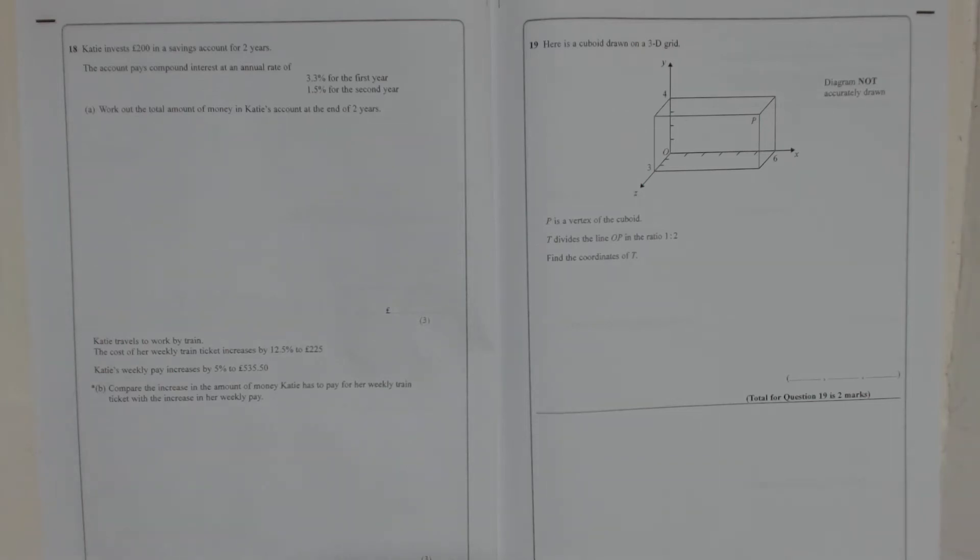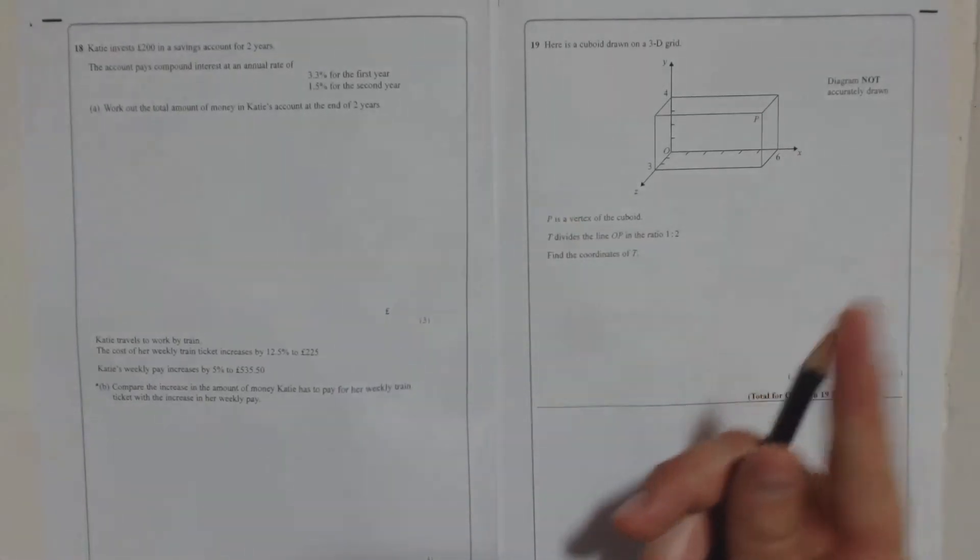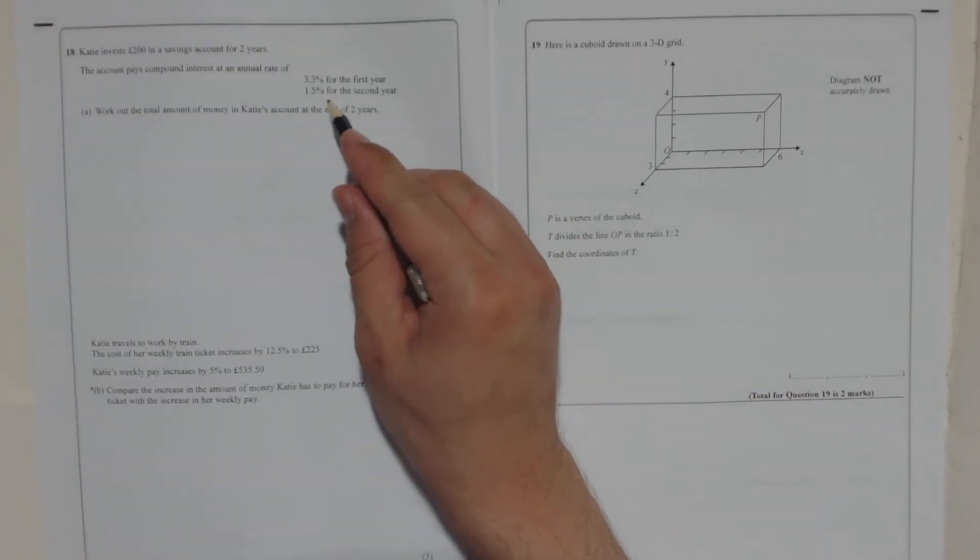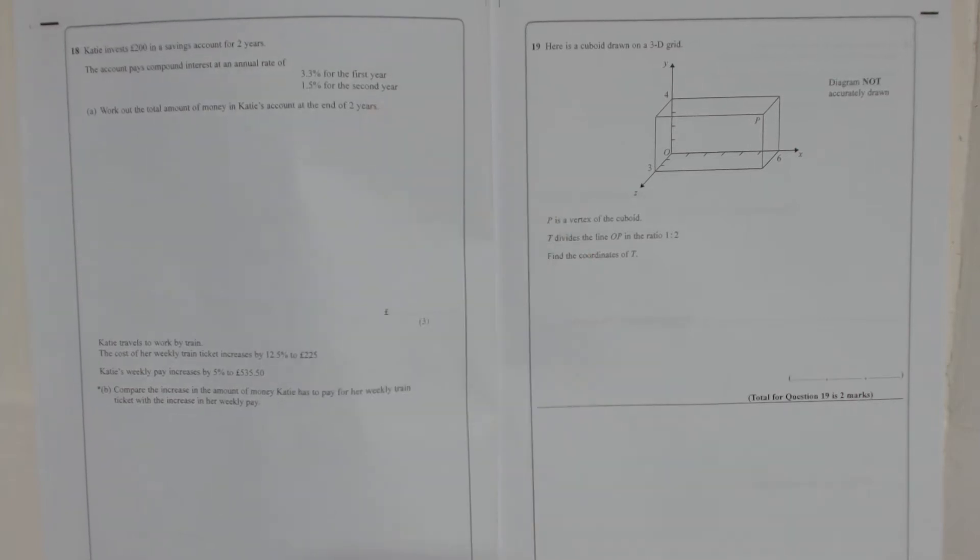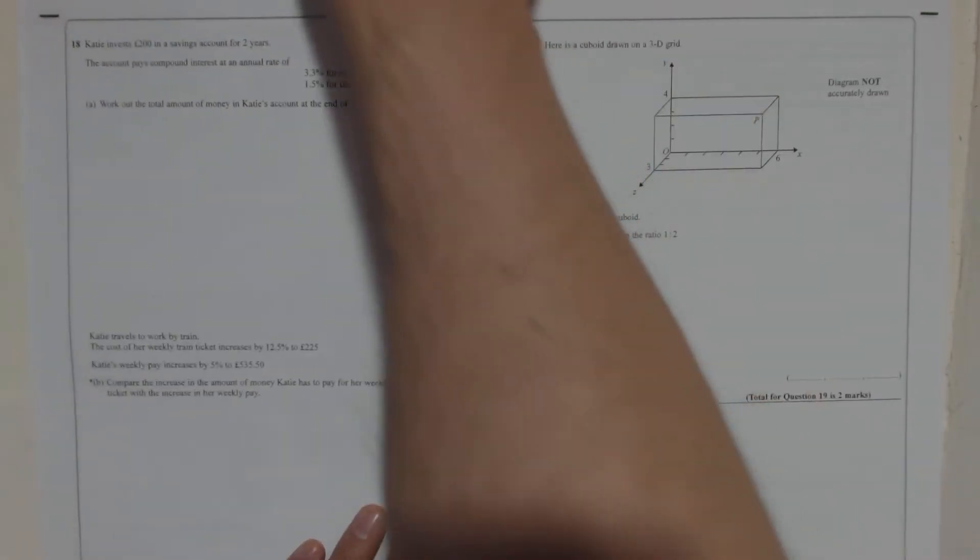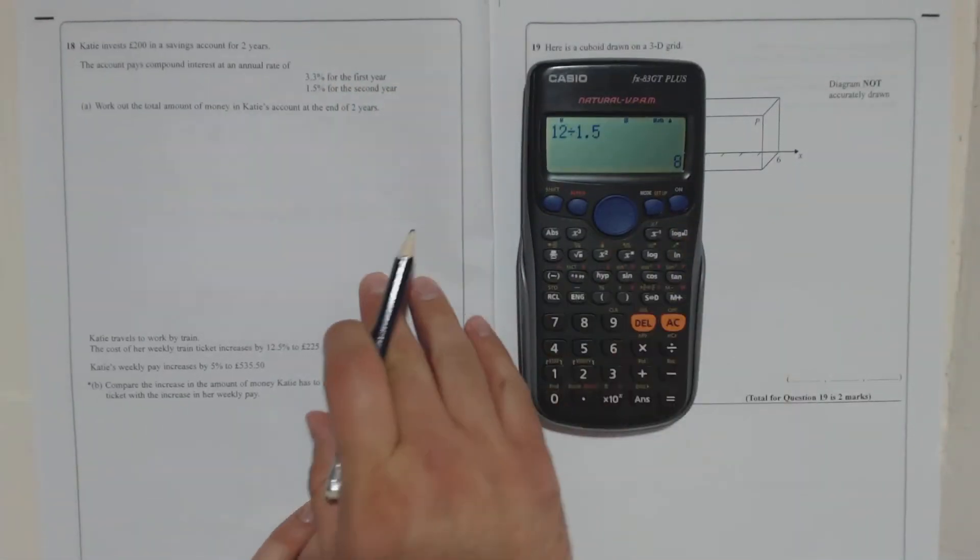Question 18. Katie invests £200 in a savings account for two years. The account pays compound interest at an annual rate of 3.3% for the first year and 1.5% for the second year. Work out the total amount of money in Katie's account at the end of two years.